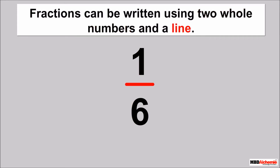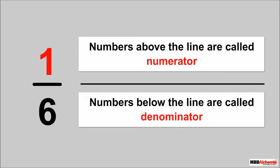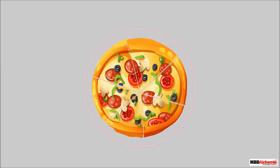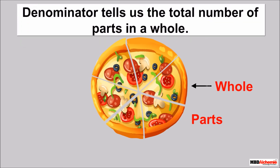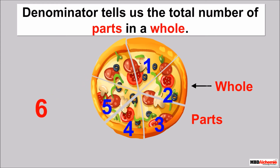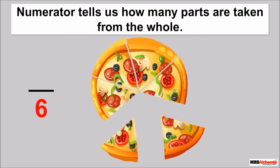A fraction uses 2 whole numbers and a line. Numbers above the line are called the numerator. Numbers below the line are called the denominator. The denominator tells us the total number of parts in a whole. The numerator tells us how many parts are taken from the whole.